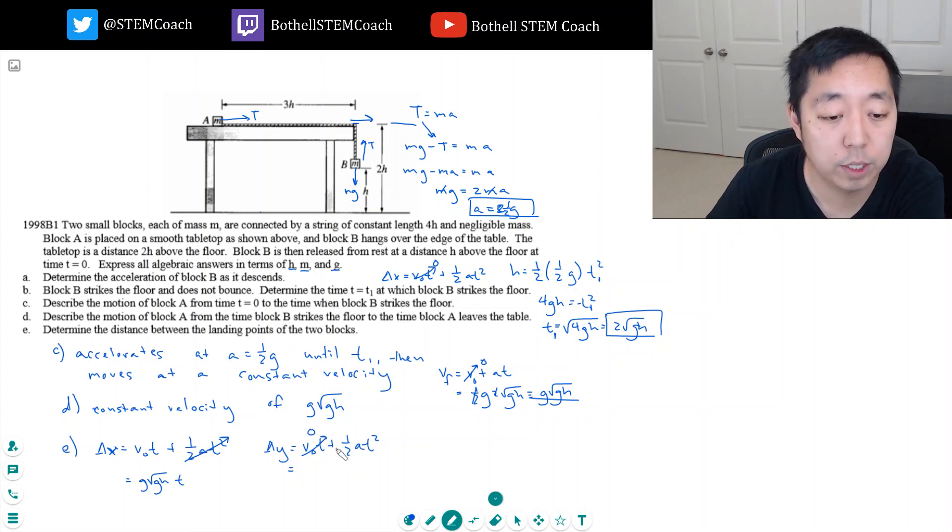He's subject to simply gravity, so this is one half G T squared equals 2H. So again, 4H over G equals T squared, so T equals 2 root H over G. I'm going to use this time, so root GH times 2 root H over G. This is 2H.